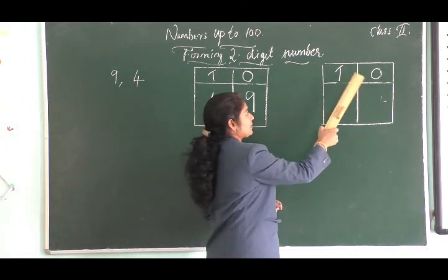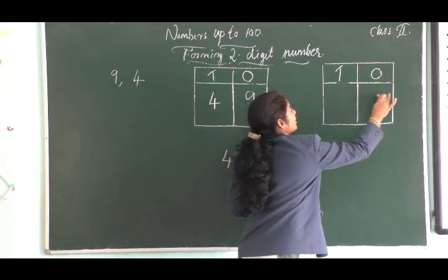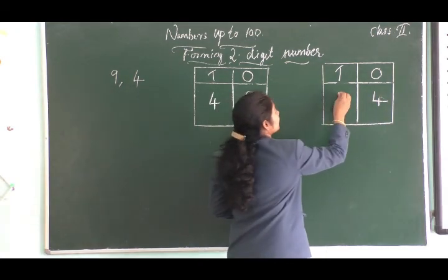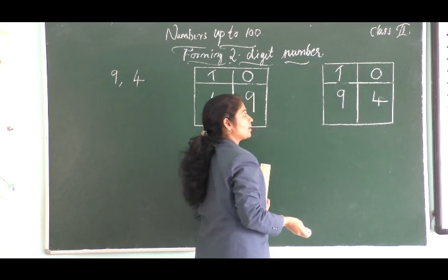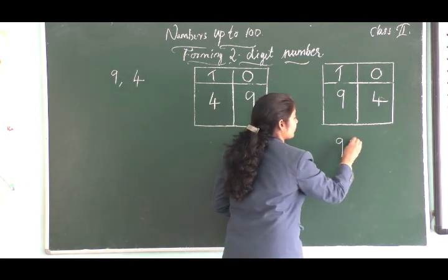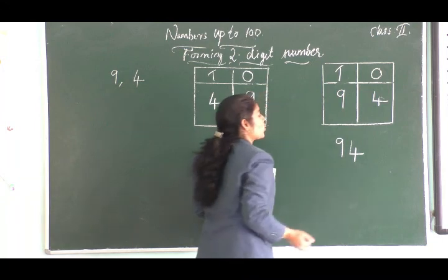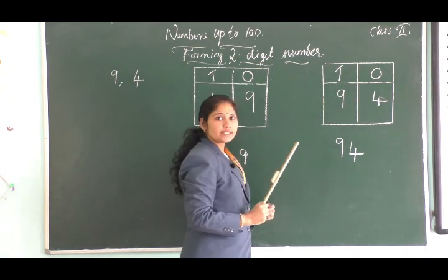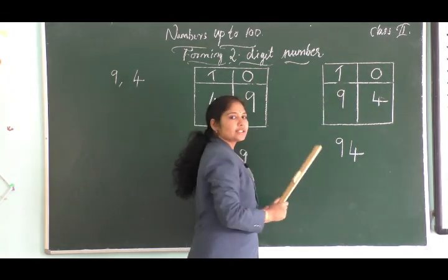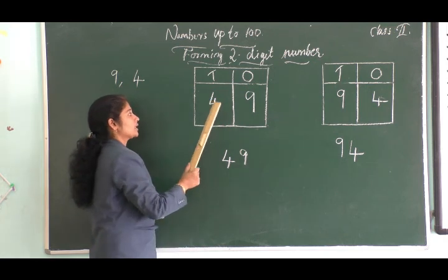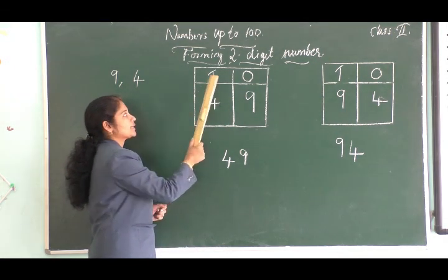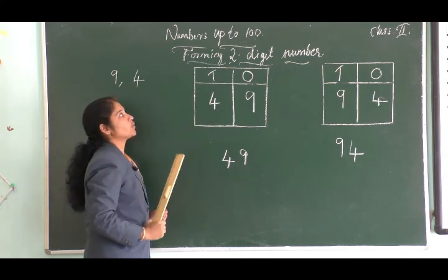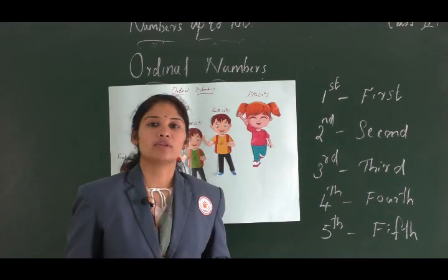We can also keep four at the ones place and nine at the tens place, giving us another two-digit number, 94. To form the greatest number, keep the greatest digit at the tens place. To form the smallest number, keep the smallest digit at the tens place. Hope you understood how to form a two-digit number.